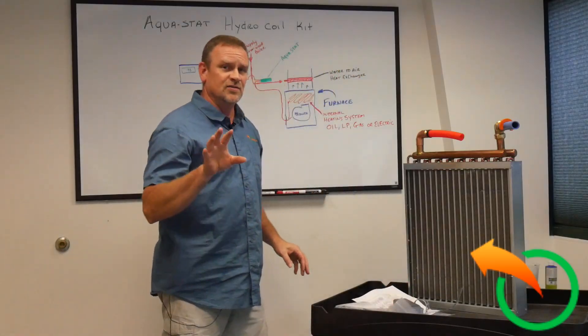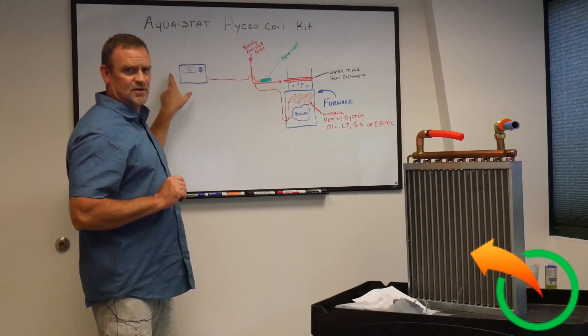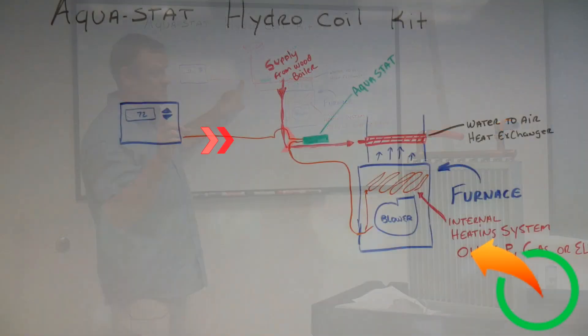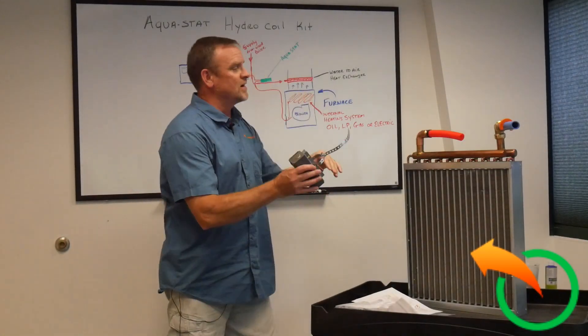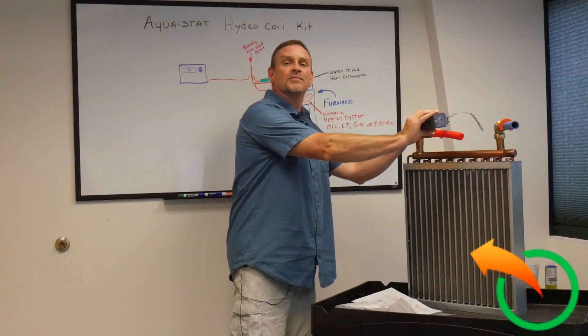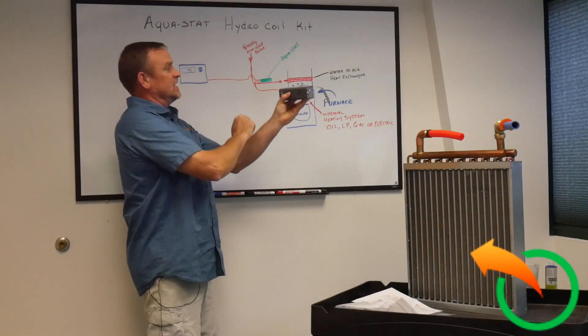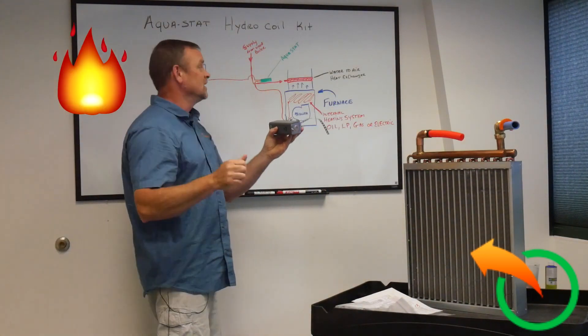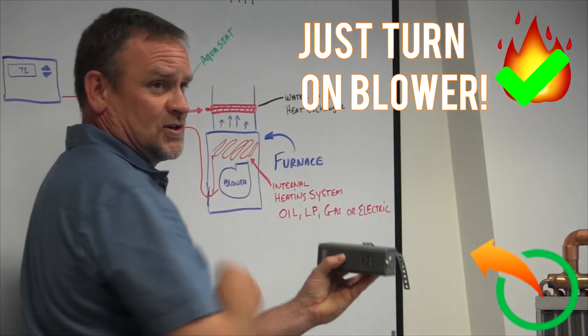What this does and the basic concept is, is that when the existing inside thermostat is calling for heat inside the house, the wire goes through which is already in place, goes to the Aquastat which is mounted in the furnace and the Aquastat, which is mounted on the supply side of the PEX line coming in from the wood boiler. The signal comes down and says, hey, is the water in this pipe hot or not? And if it says it is hot, the signal still continues down and says, just turn on the blower, please. We do not need the heating element to turn on.